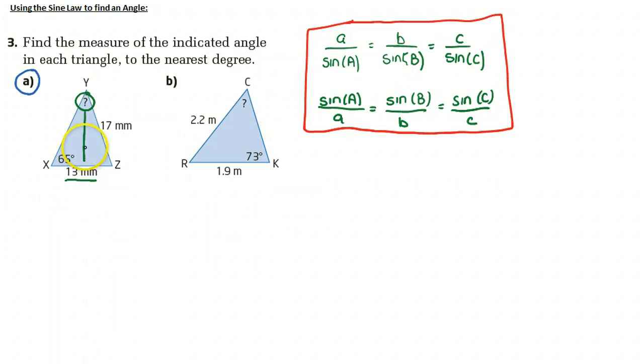So now in order to use the sine law, I have to be sure I have one pair that is an angle with its matching length. So I look here and I know X is 65 degrees, and I see that I have the matching length there.